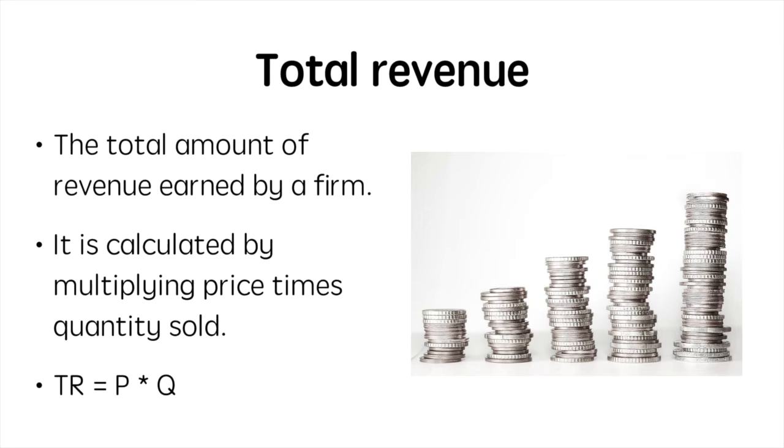Total revenue equals the total amount of revenue earned by a firm. It is calculated by multiplying price times quantity sold. If a firm sells 100 units for $5 each, then their total revenue is equal to $500.